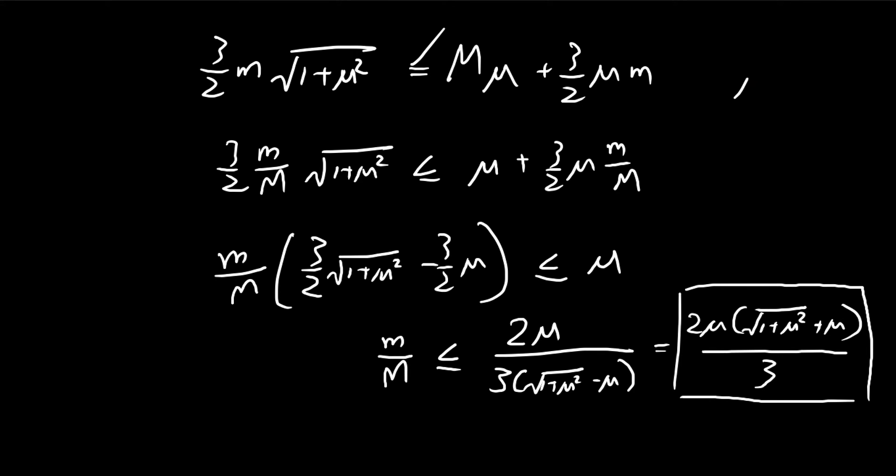And then in our question, we know that mu is equal to 1. So you can just substitute that in. So you know that this ratio is always smaller than 2 over 3 times square root of 2 plus 1.